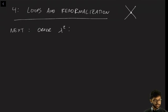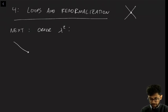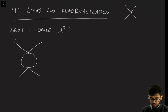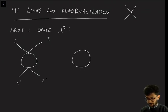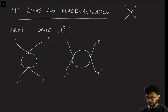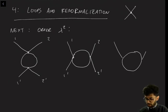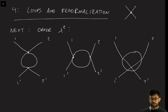At this order there are three diagrams that contribute. Let me draw them for you. Here's the first one, with external legs labeled 1, 2, 1 prime, 2 prime. Here's the second one with legs 1, 1 prime, 2, 2 prime. And here's the last one with legs 1, 2, 1 prime, and 2 prime.